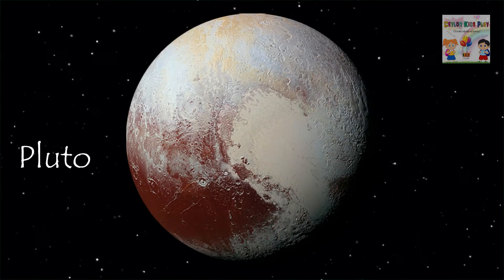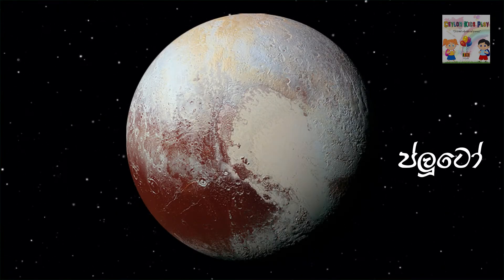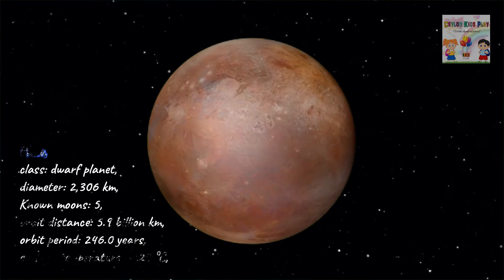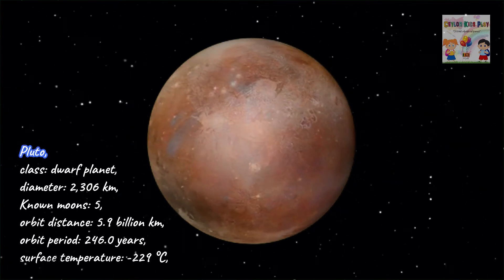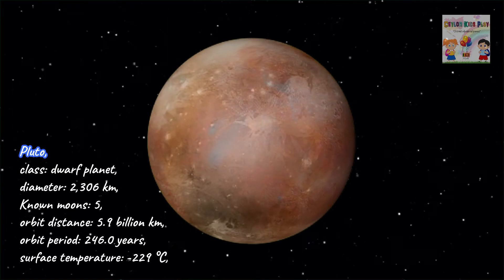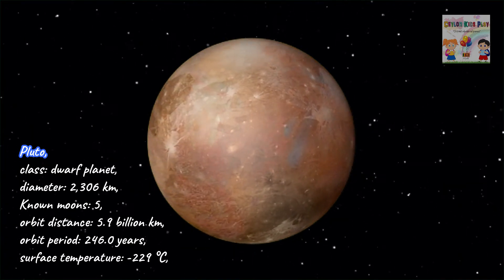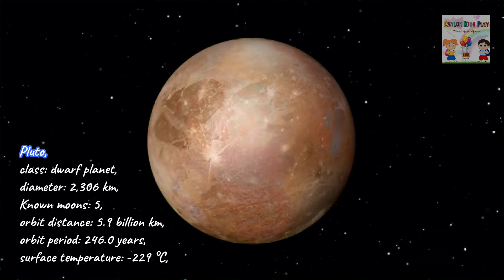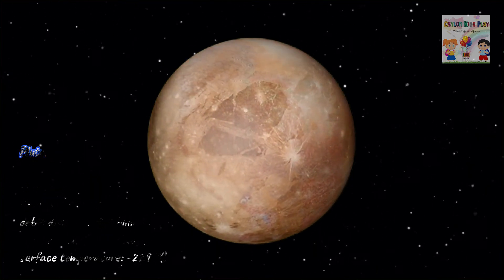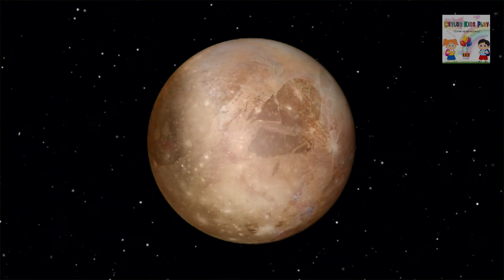Pluto! Pluto, class: dwarf planet. Diameter: 2,306 kilometers. Known moons: 5. Orbit distance: 5.9 billion kilometers. Orbit period: 246.0 years. Surface temperature: minus 229 degrees Celsius.